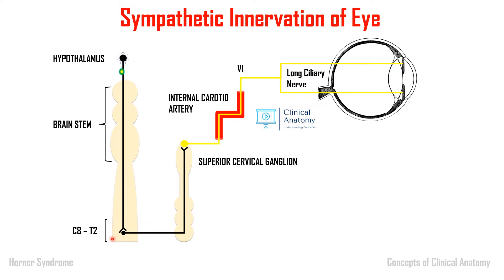The second-order neuron starts from C8 to T2, goes to the sympathetic chain, and ascends up to the cervical ganglia — specifically the superior cervical ganglion. From here, the third-order neuron arises. Postganglionic fibers from the sympathetic supply typically accompany arteries. Here, it accompanies the internal carotid artery. It supplies not only to the eyeball but to the whole face — mainly the head and neck completely.